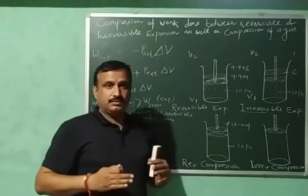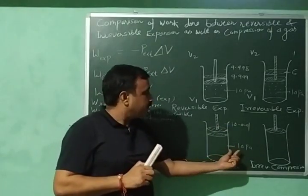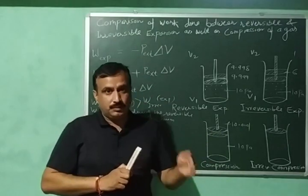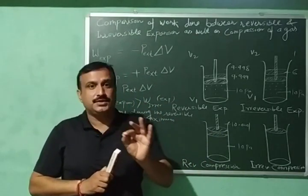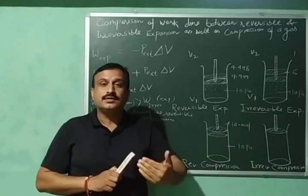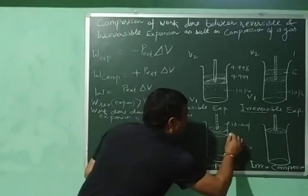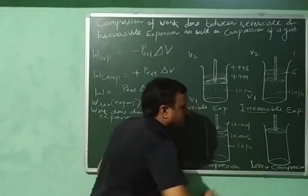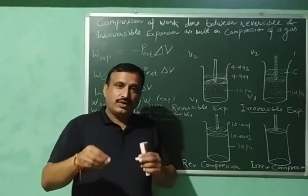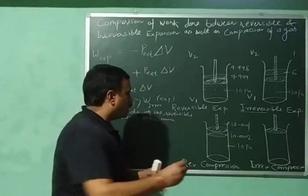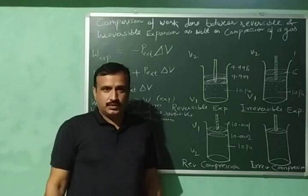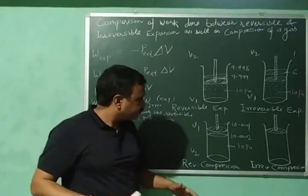Equilibrium is restored again with external and internal pressure equal. During compression, the internal pressure of the gas increases. To carry out further compression, I increase the external pressure by a very small amount again — to 10.002. By following these very slow steps, I will reach from initial volume V1 to final volume V2. This is how reversible compression is carried out.